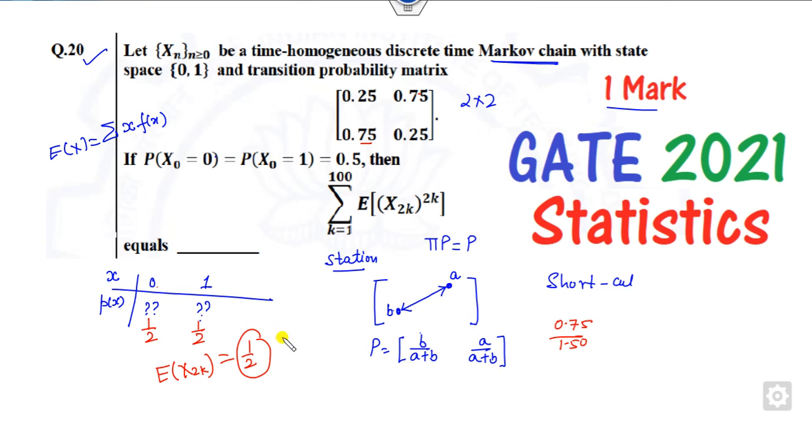Now, since you are talking about the sum of them, so how many times are there? 100 times. So the right answer of this problem is 50, is the correct answer.